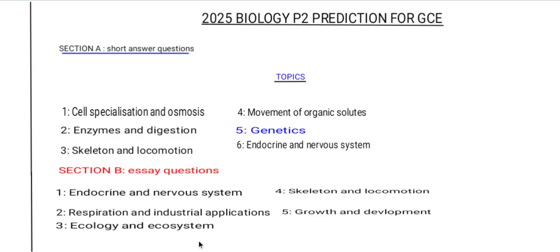The third Section B topic is ecology and ecosystems. Know the key terms used under this topic, such as community, habitat, niche, and so on.